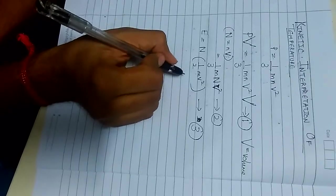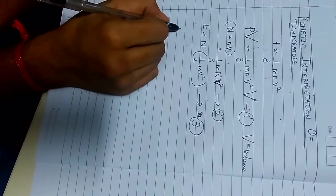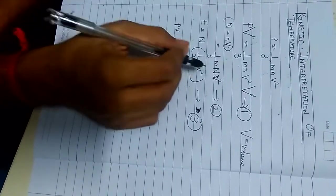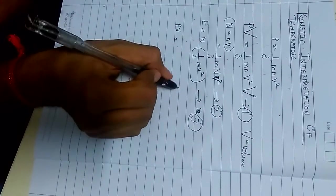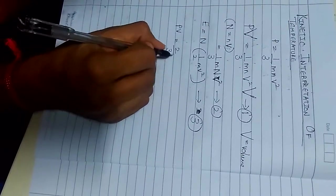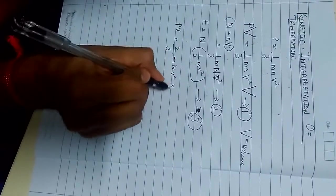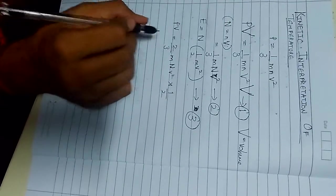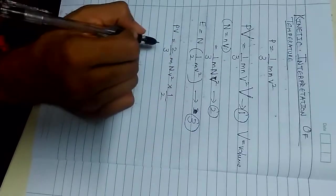We can substitute the equation 3 and equation 2. First of all we will multiply this equation 2 on the numerator and denominator side by 2. 2 by 3 m and v square into 1 by 2. Now substitute the value in equation 3.